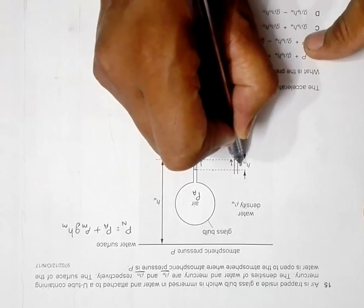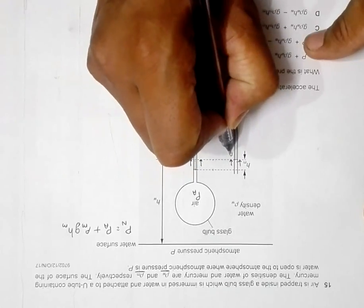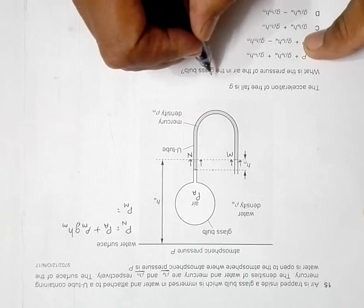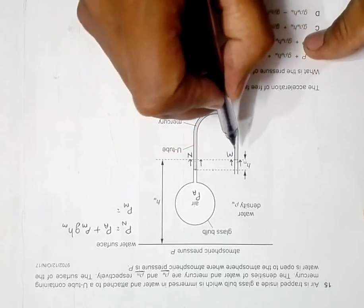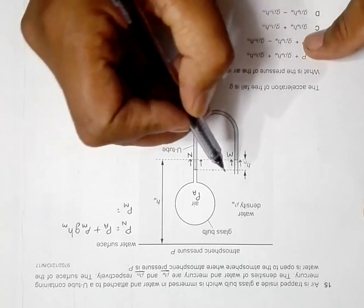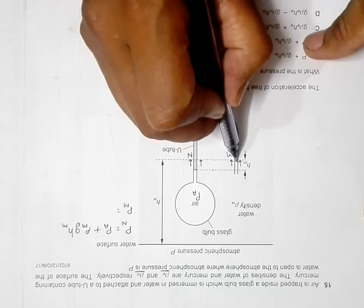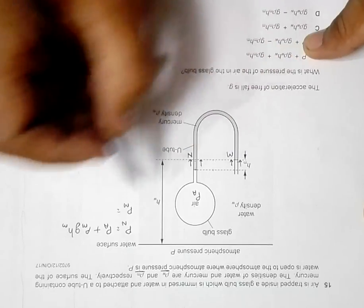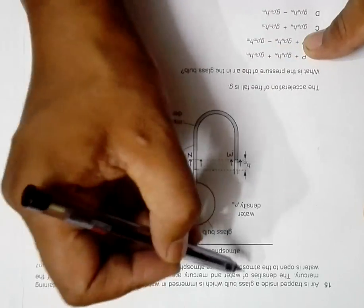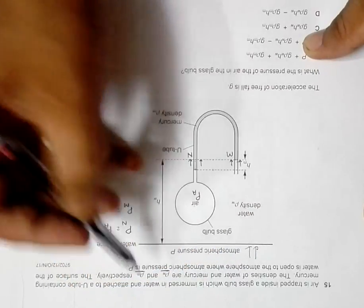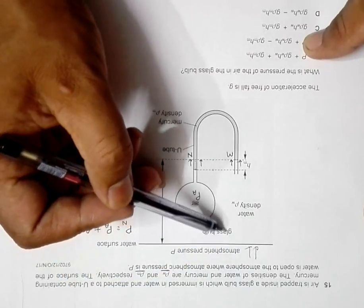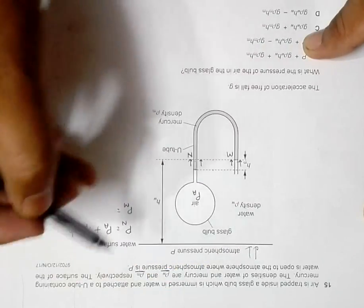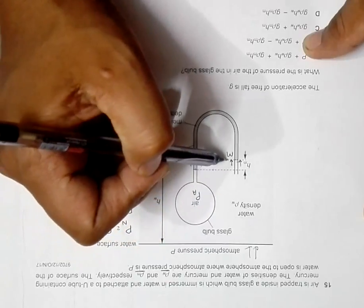And then from the other side, if I name this point as M, so I will have Pm is equal to, here we have the pressure on this open end is because of the atmospheric pressure, atmospheric pressure here, plus the pressure of this much of water.